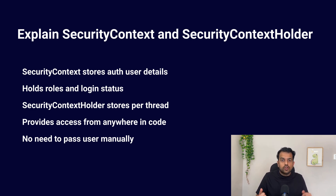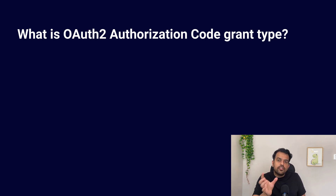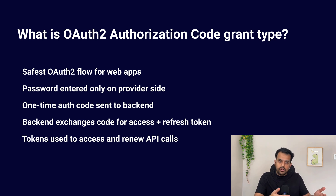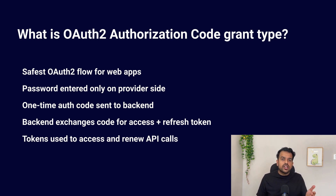The next question is: what is the OAuth2.0 Authorization Code Grant type? The OAuth2.0 authorization code flow is the safest OAuth flow for web apps because the password never touches our application. The user clicks login and Spring sends them to the OAuth2.0 provider login page — they enter their password there, not in our app. After login, the provider sends back a one-time authorization code to our backend API, and our backend exchanges that code for an access token and refresh token. The browser only sees the authorization code; the actual token exchange happens server-to-server, which is the safest approach.